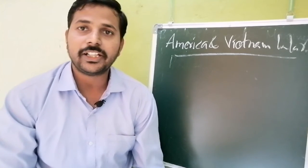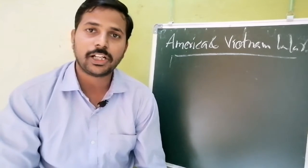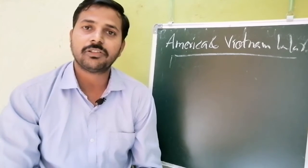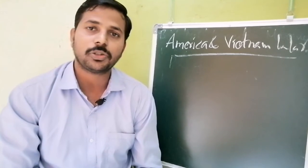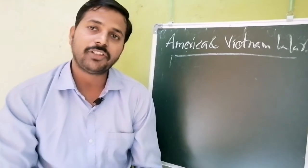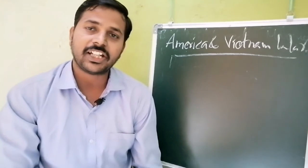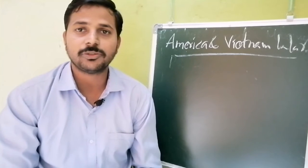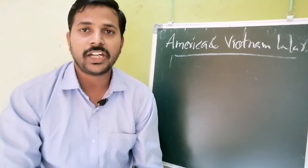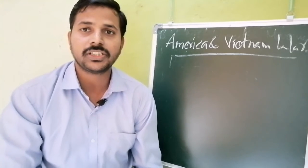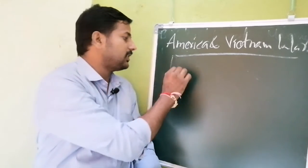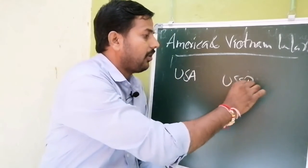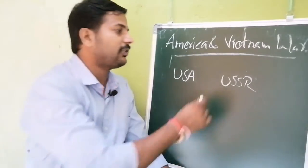Until the end of the Second World War, Britain was the one and only super powerful country in the world. But during the Second World War, Britain lost totally its power. After the Second World War, two countries emerged as powerful nations — the USA and the USSR. The Cold War took place between these two only.